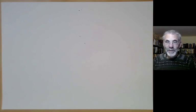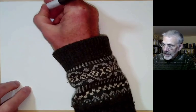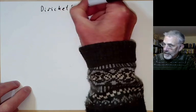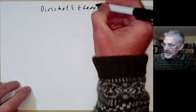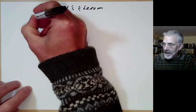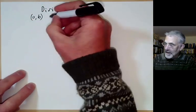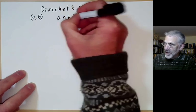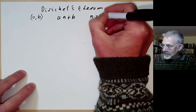This lecture is part of Berkeley Math 115, an introductory undergraduate course on number theory, and will be about Dirichlet's theorem. Dirichlet's theorem says that if a and b are co-prime positive integers, then there are infinitely many primes of the form an plus b, for n greater than or equal to 1.